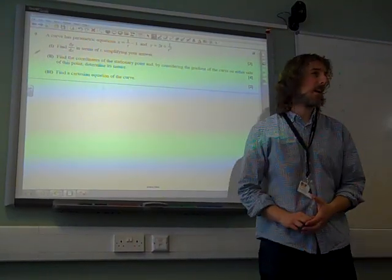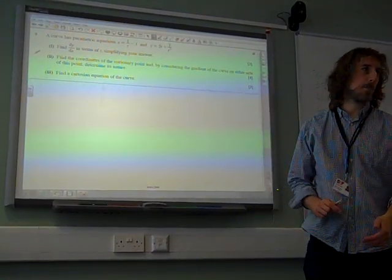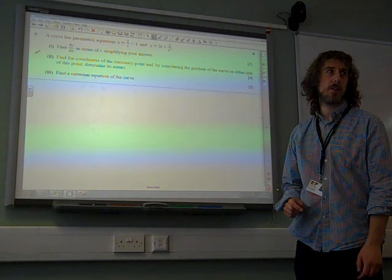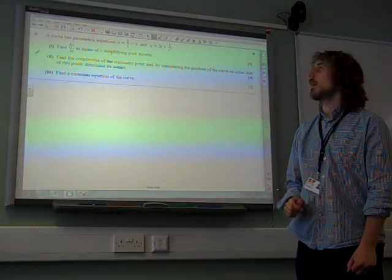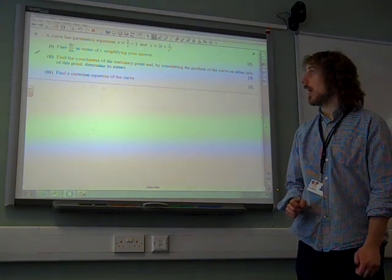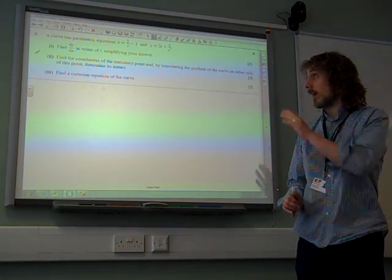Right, question 9. If there has parametric equations x equals 1 over t minus 1, and y equals 2t plus 1 over t squared. Find dy by dx.